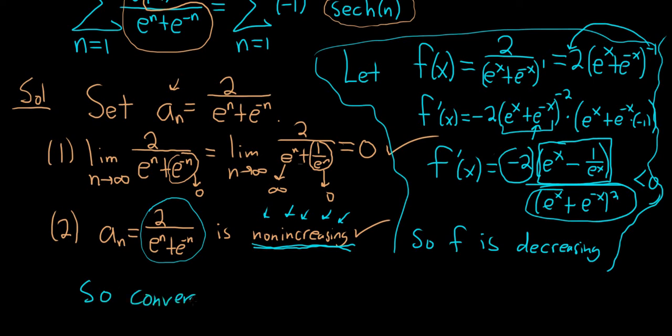And in general, when you're showing non-increasing, this is a good strategy, right? You just redefine it as a function of x, and then you show that the derivative is negative. So I hope this video has been helpful. That's it, and good luck.